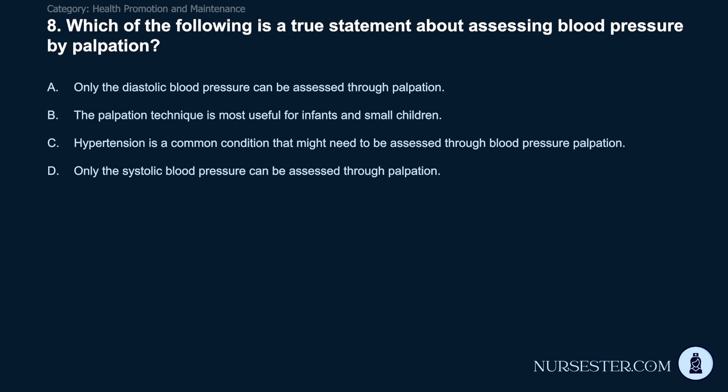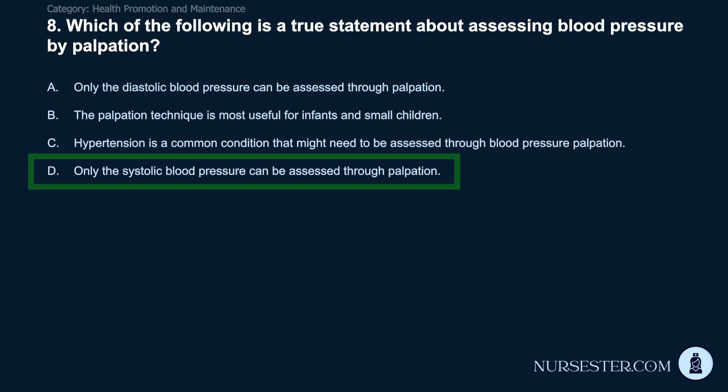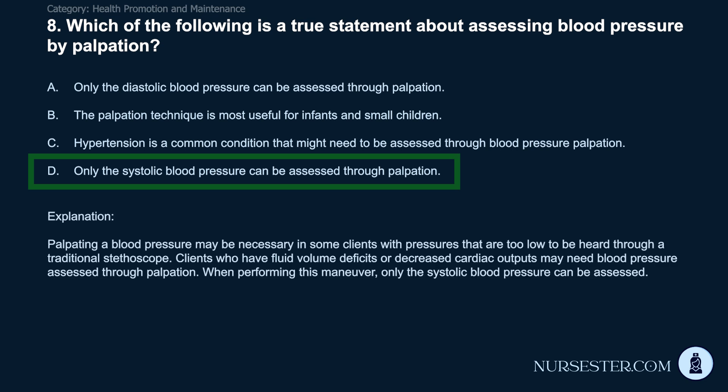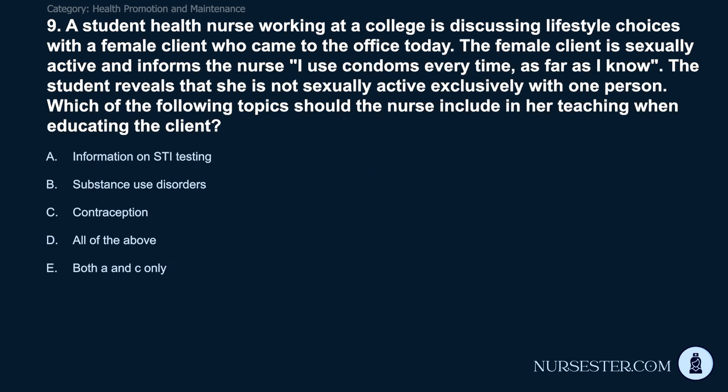Question 8: Which is a true statement about assessing blood pressure by palpation? A) Only the diastolic blood pressure can be assessed through palpation. B) The palpation technique is most useful for infants and small children. C) Hypertension is a common condition assessed through palpation. D) Only the systolic blood pressure can be assessed through palpation. Correct answer: D. Only the systolic blood pressure can be assessed through palpation. Palpating a blood pressure may be necessary in clients with pressures too low to be heard through a stethoscope. Clients with fluid volume deficits or decreased cardiac output may need this technique.